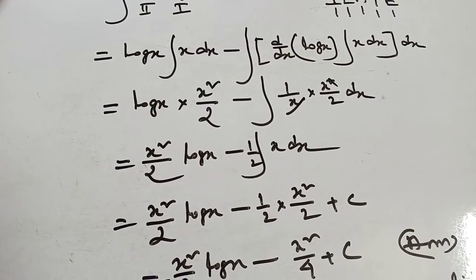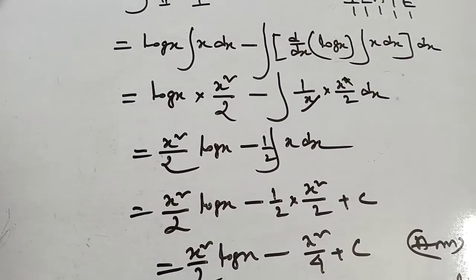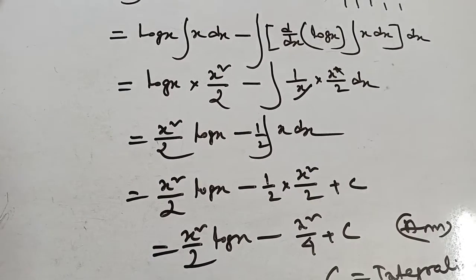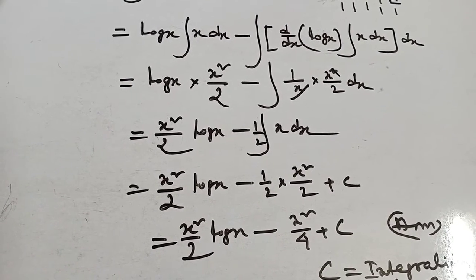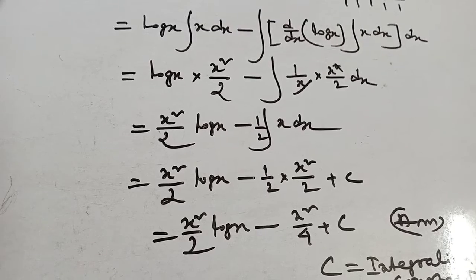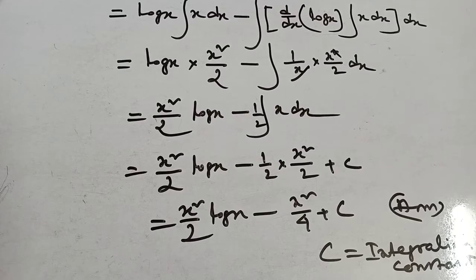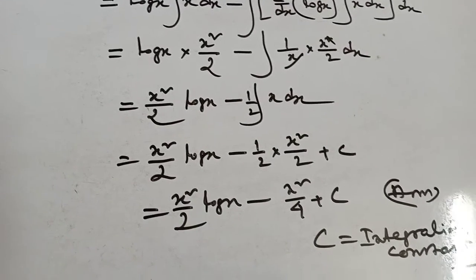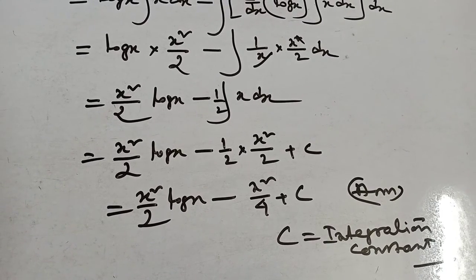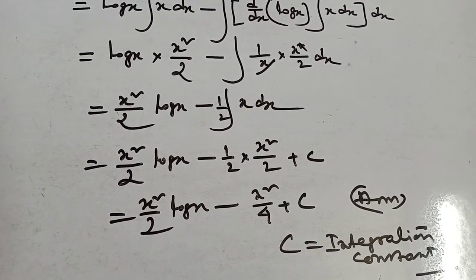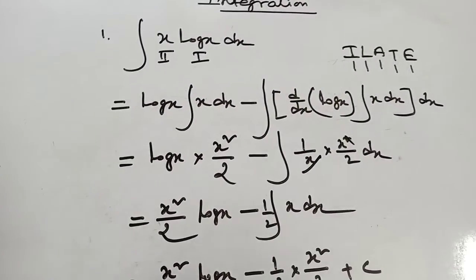Integration, third bracket, dx of log x into x dx. x log x into integration of x minus x squared by 2, minus integration dx of log x, which is 1 by x into x squared by 2 dx. That gives x squared by 2 into log x minus 1 by 2x dx, equals x squared by 2 log x minus 1 by 2 into x squared by 2 plus C. So the answer is x squared by 2 times log x minus x squared by 4 plus C. C is the integration constant — this is the most important term in integration by parts.